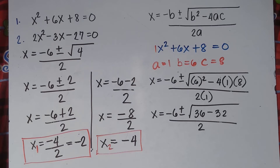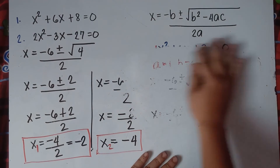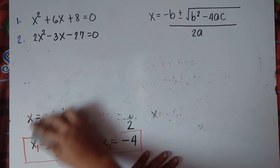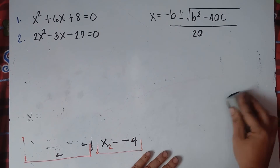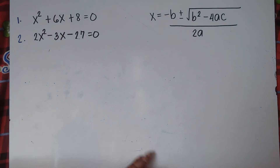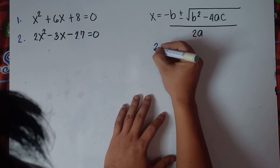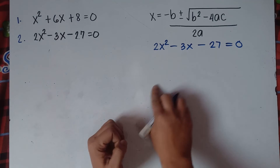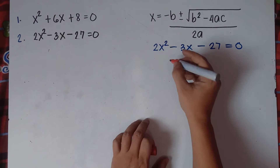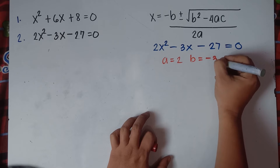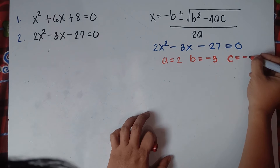Pause the video — I will erase number 1. Let's try number 2. It would be really easy when the number inside the square root is a perfect square. Our equation is 2x²−3x−27=0. Get the values of a, b, and c: a is beside x², so a=2; b is beside x, so b=−3; and c is the constant, so c=−27.